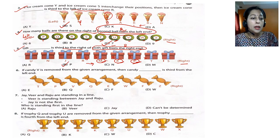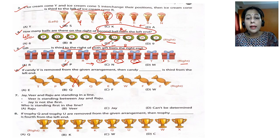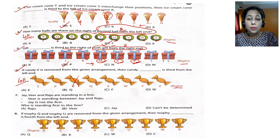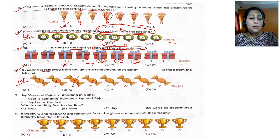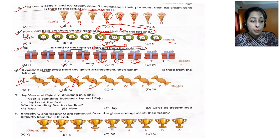Question 6: if candy V is removed from the given arrangement, then candy dash is third from the left end. The left end is already shown. Third from the left end: first, second, third — since V is already removed we skip it. The answer is Q, so option B is your answer.